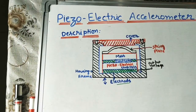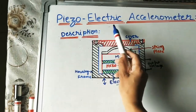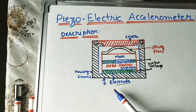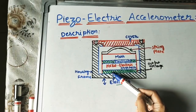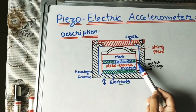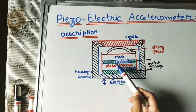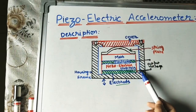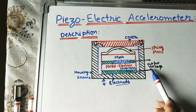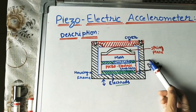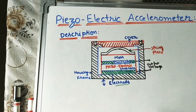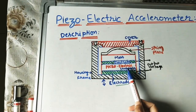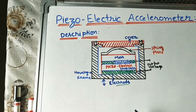Let us take the description. The first part: we are using piezoelectric crystals. On both sides of the crystal we keep electrodes — shown here in green. These electrodes are connected to the terminals, which are the electric wires where we can measure the output voltage. So the first part is the piezoelectric crystals placed in between two electrodes, and between the terminals we can measure the output voltage.